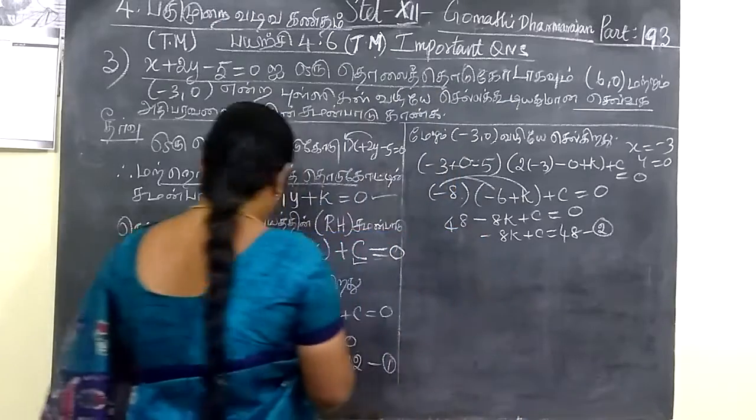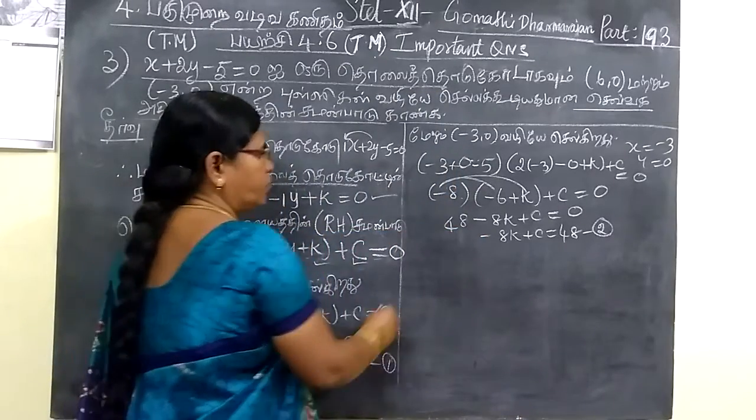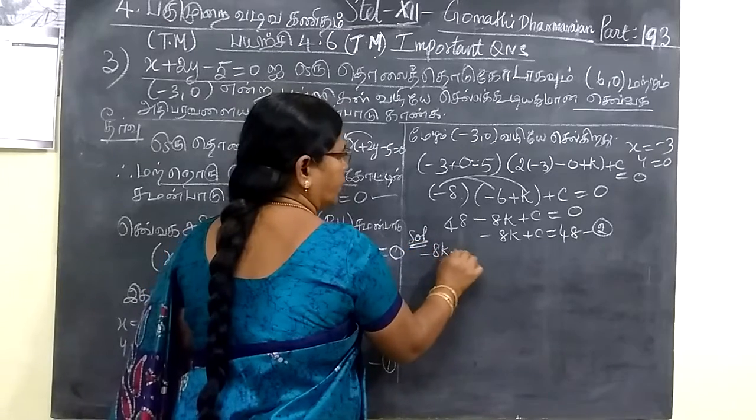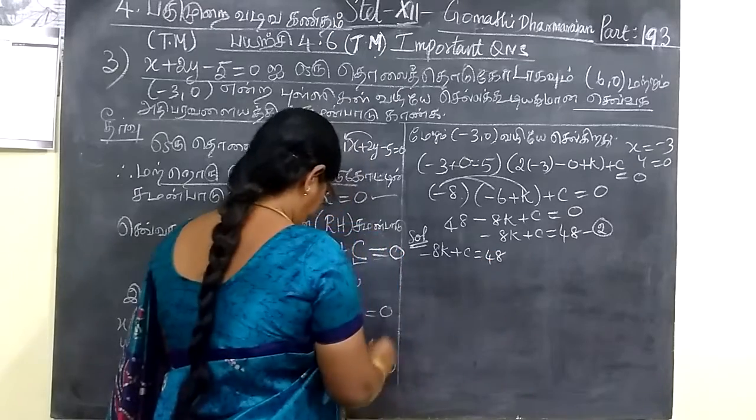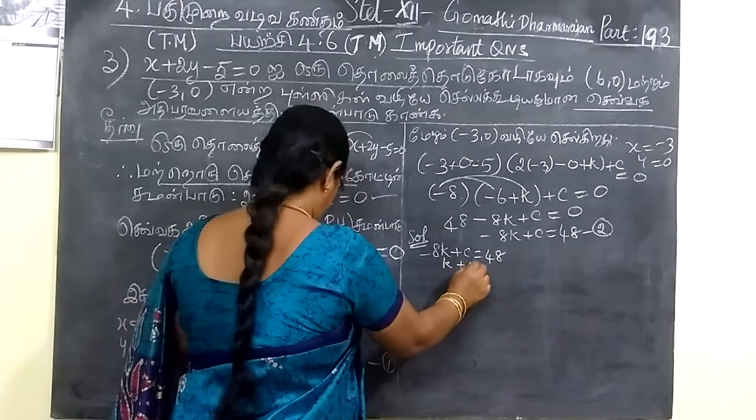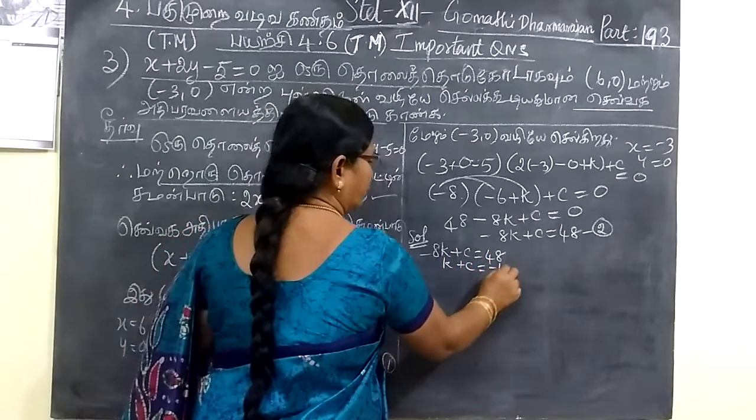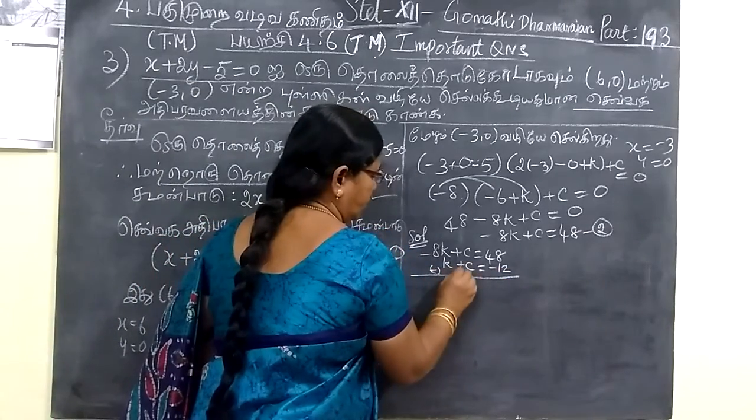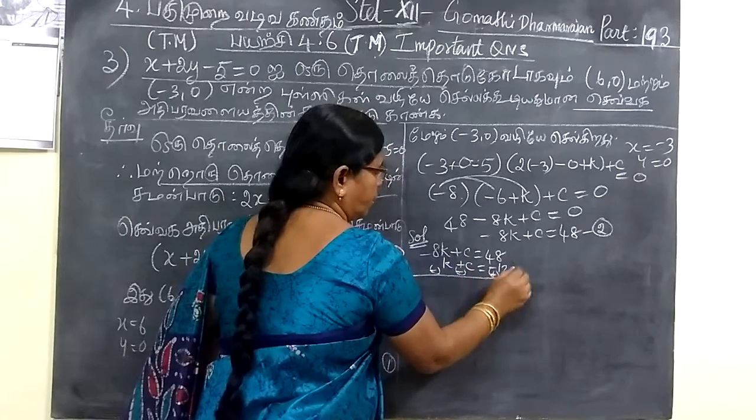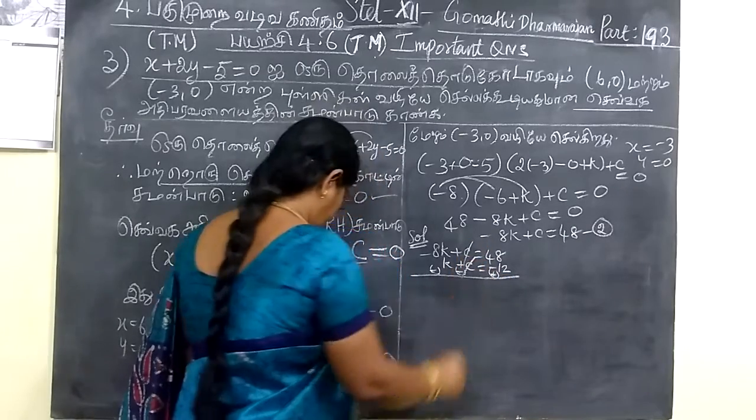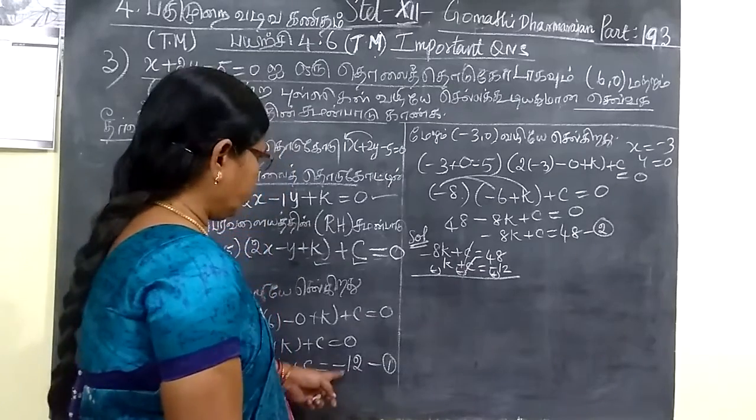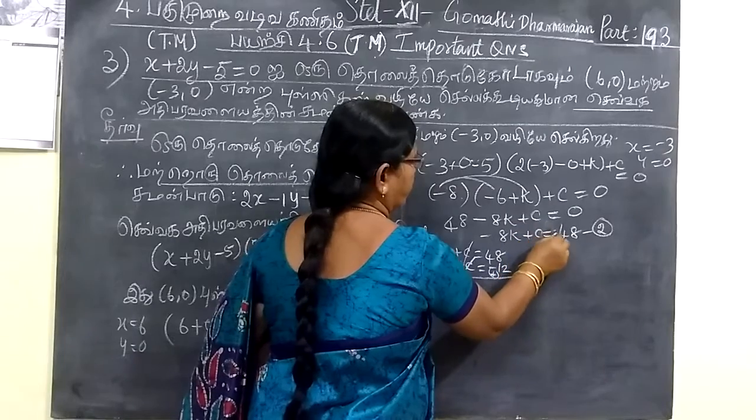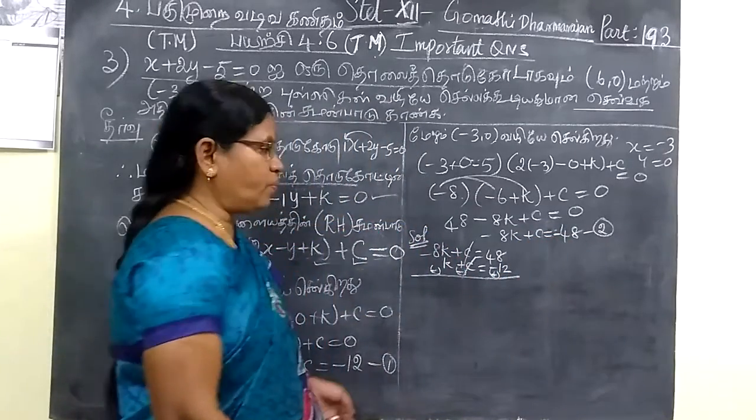So now equation 1 and equation 2, we solve them. k plus c equal to minus 1 and minus 8k plus c equal to 48. Sign change: minus 8k plus c equal to 48, when we subtract we get plus 48 and minus 48. So here we will be careful with this.